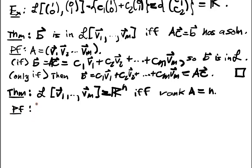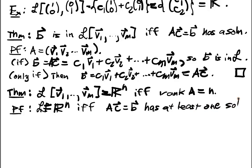So what's the proof of this? Well, we have that because of this theorem, we have that this is equal to Rn, if and only if, so L is equal to Rn, if and only if, AC equals B has a solution, at least one solution, for all B.